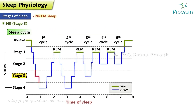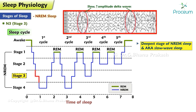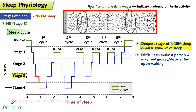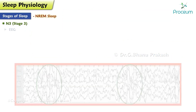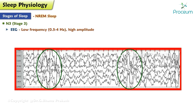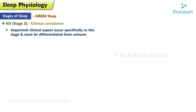Stage N3, also known as slow wave sleep, is the deepest stage of non-rapid eye movement sleep. It is characterized by slow, high-amplitude delta waves, which indicate a profound reduction in brain activity. It is difficult to wake a person during this stage, and they may feel groggy or disoriented upon waking. N3 constitutes approximately 22 percent of total sleep time. During this period, breathing rate, heart rate, and blood pressure are at their lowest levels. This is the most restorative stage of sleep. The EEG displays low-frequency (0.5 to 4 hertz) high-amplitude delta waves.